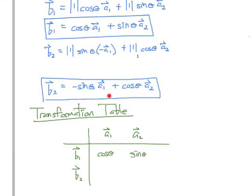B2 is related to A1 through a negative sine theta, and then B2 is related to A2 through a positive cosine theta. What we've created here in this transformation table is a compact form that relates these basis vectors with each other. The insides of the transformation table are actually the dot products where we have A1 dotted with B1 is cosine theta, A2 dotted with B1 is sine theta, and so forth.